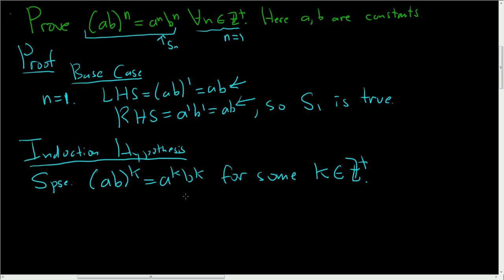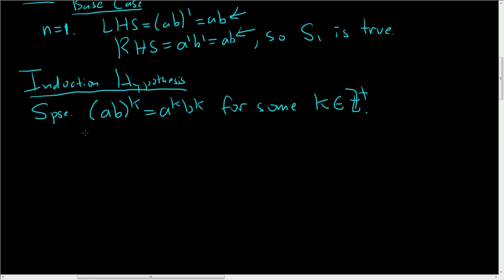The last step is the induction step. We have to show that our statement is true when n is equal to k plus 1, so the induction step. So it's really helpful to write down what we need to show. We need to show ab to the k plus 1 is equal to a to the k plus 1, b to the k plus 1.